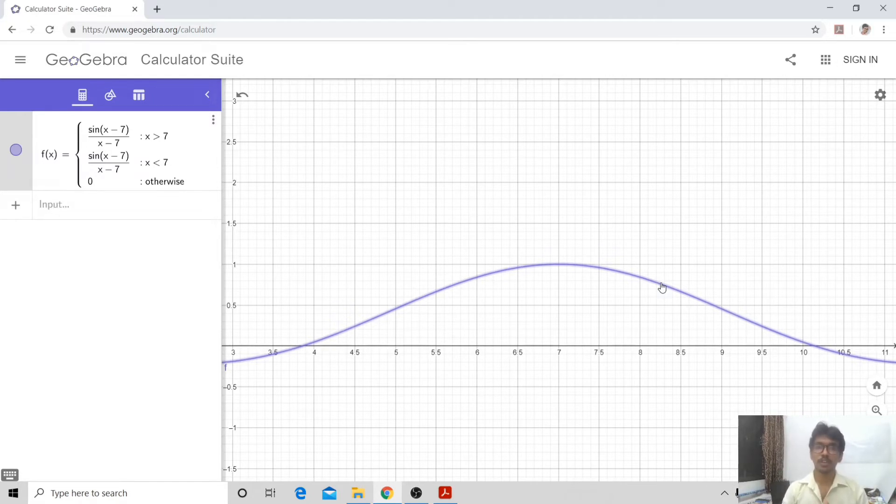Removable discontinuity is a type of discontinuity where the limit is not same as the function value. At those points, you can redefine the function to make it continuous.